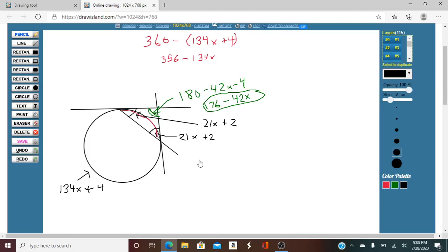So we're going to do 134X plus 4 minus 356 minus 134X.